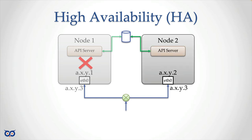If node 1 suffers a failure, node 1 is deactivated so it no longer tries to control the service IP or floating address. Then on node 2 we activate the services we need and assign IP address three to this host. Clients who are trying to connect on the switch get routed to this other node because it is now the one with IP x.y.3. The clients always use the service or floating IP address - they never use IP address one or two because they only need to talk to the service.